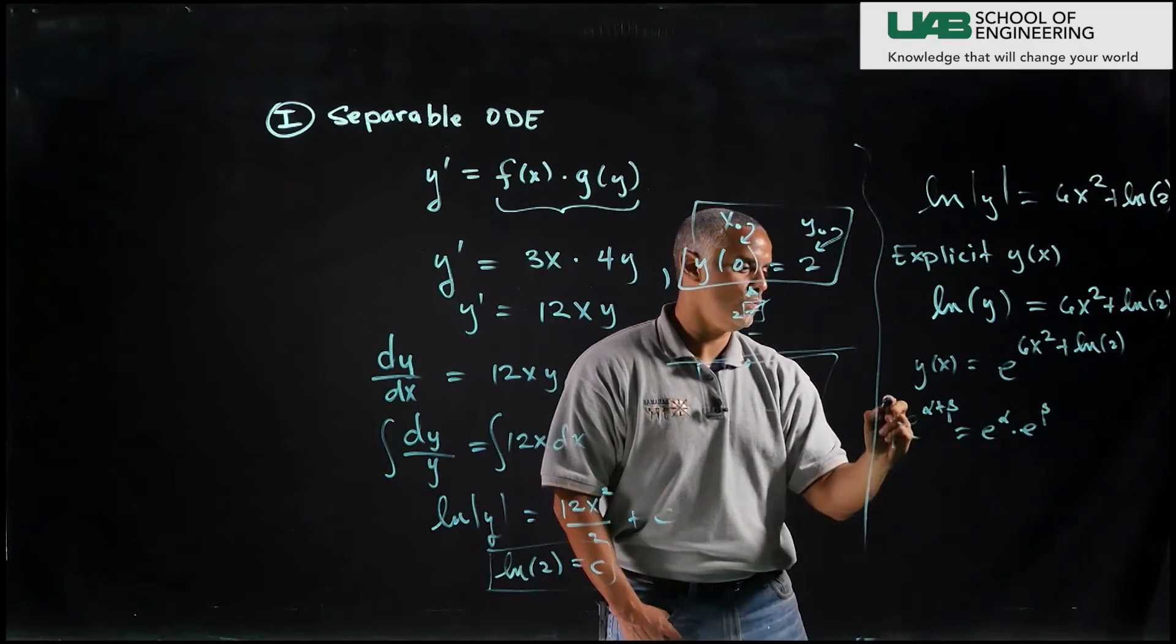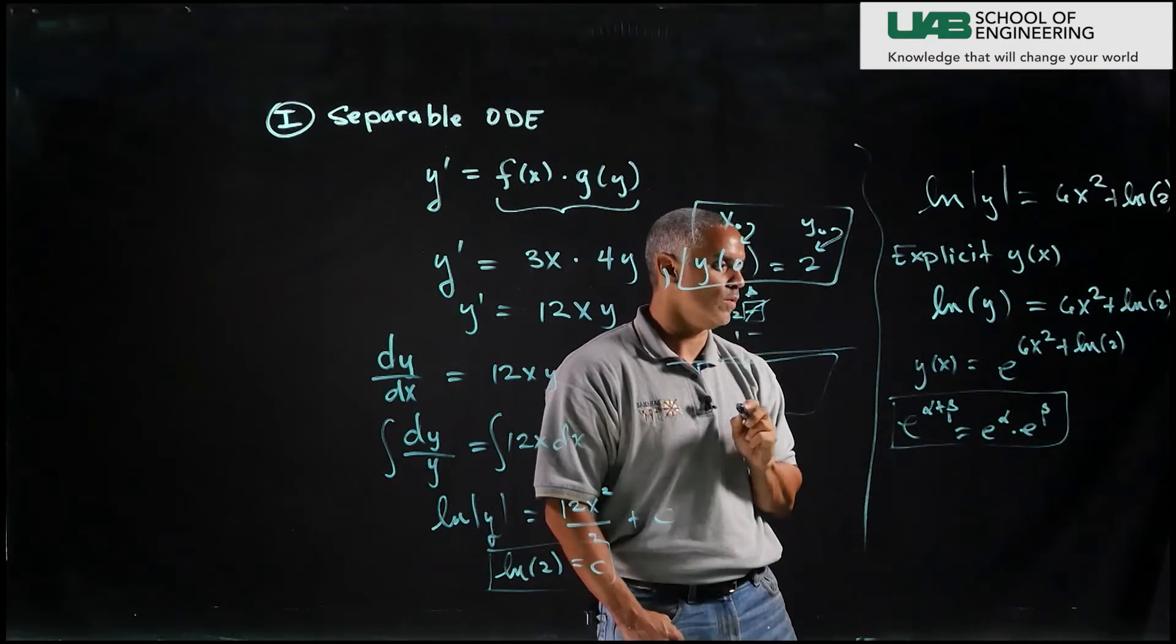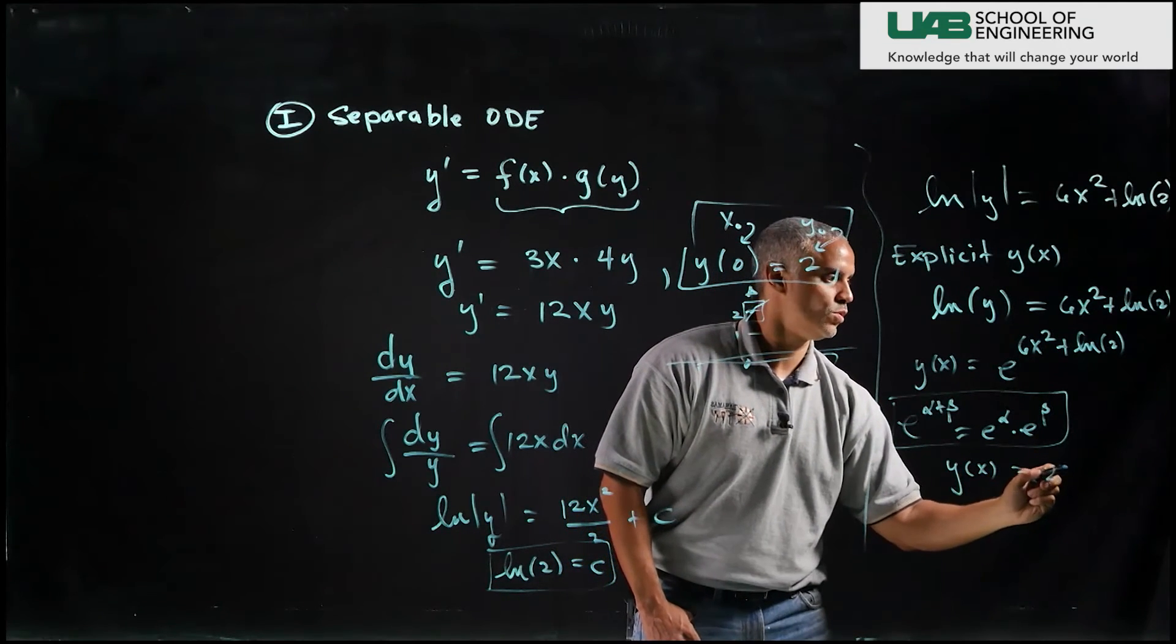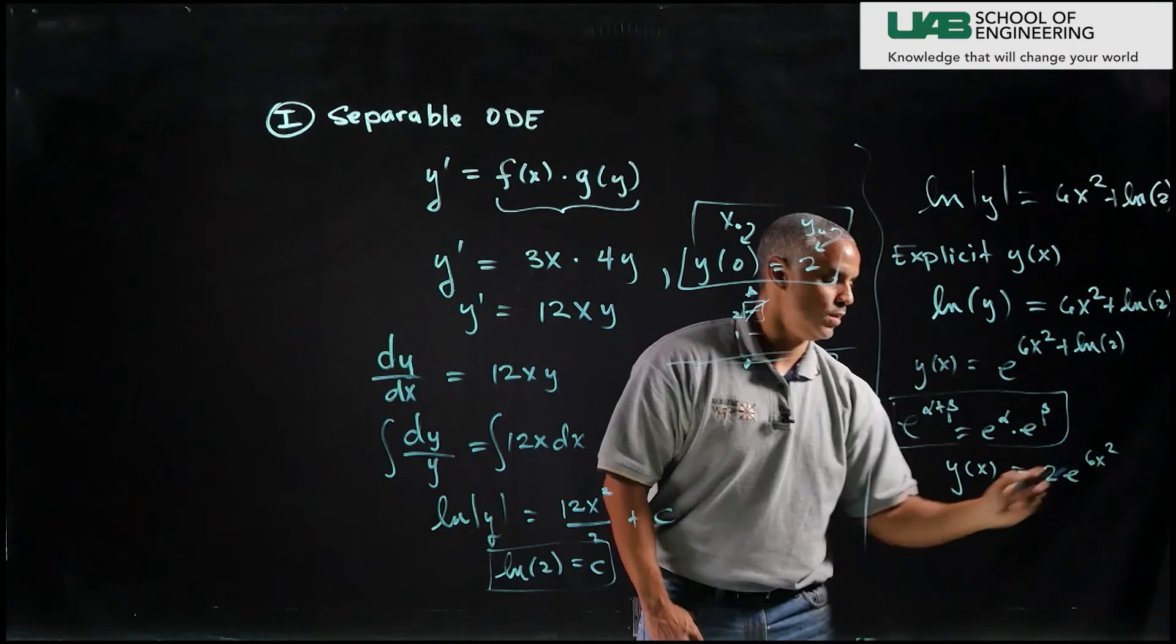So I'll use this law of exponents to write my model as y of x equals 2e to the 6x squared.